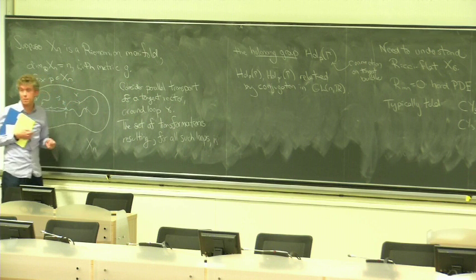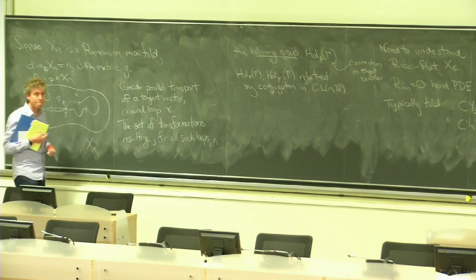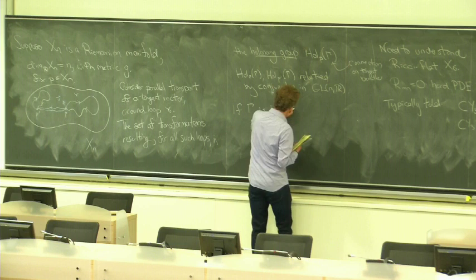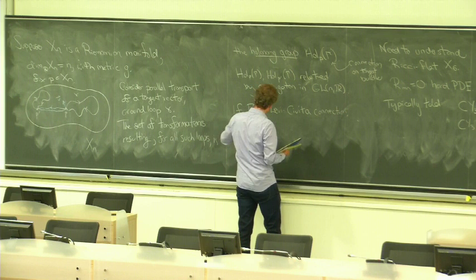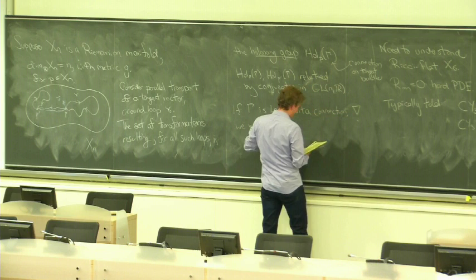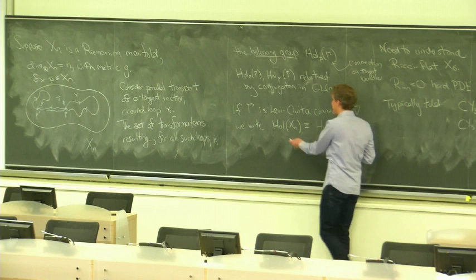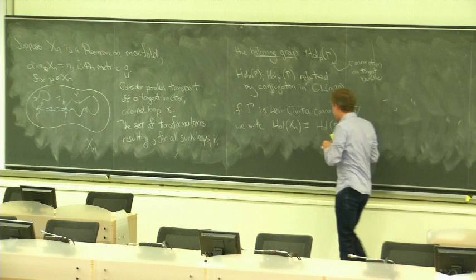So, the holonomy group at P and the holonomy group at P prime by this diagram are related by conjugation. hol_P of gamma, hol_P prime of gamma, are related by conjugation in GL(n,R). So, we can think of them as equivalent. So, I can suppress the expression of dependence on the base point. No one cares about the base point, because we're anyway going to be talking about connected spaces. But I'm also going to suppress the specification of the connection, because I'm going to use the Levi-Civita connection. So, if gamma is the Levi-Civita connection,